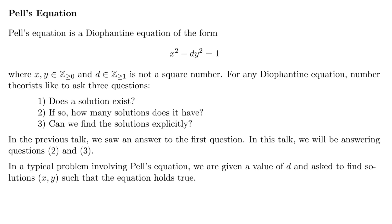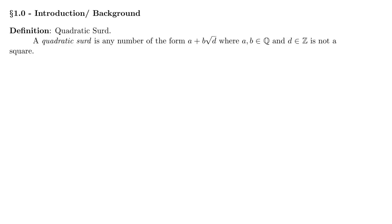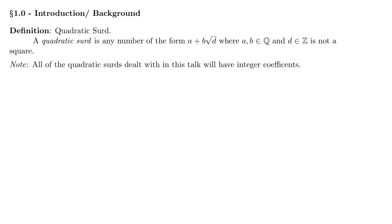In a typical problem involving Pell's equation, we're given a value of d and asked to find solutions x, y so that the equation holds true. For some background information — really just definitions of terms that'll come up — first is a quadratic surd. A quadratic surd is any number of the form a plus b times the square root of d, where a and b are rational numbers, and d is an integer and not a square. All the quadratic surds we'll be dealing with will have integer coefficients, meaning these numbers a and b.